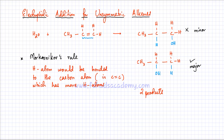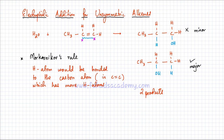Markovnikov's rule states that the hydrogen atom bonds to the carbon atom — specifically the one of the two double-bond carbons — which already has more hydrogen atoms attached to it. Looking at the two double-bond carbon atoms in propene: the right-hand carbon is bonded to two hydrogen atoms, while the left-hand carbon is bonded to only one hydrogen atom. So the hydrogen atom from H2O bonds to the right-hand carbon, making that product the major product, and the OH group goes to the other carbon atom.